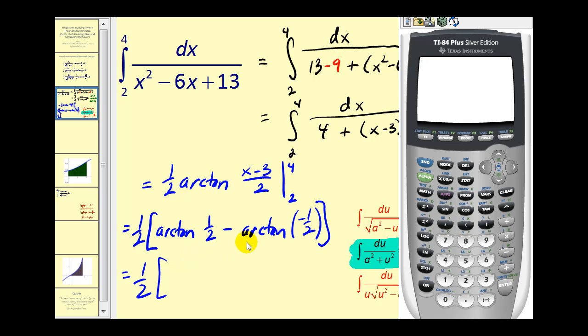So we have the arctangent of 1 half minus the arctangent of negative 1 half. So 2nd tangent 0.5 minus 2nd tangent negative 0.5.